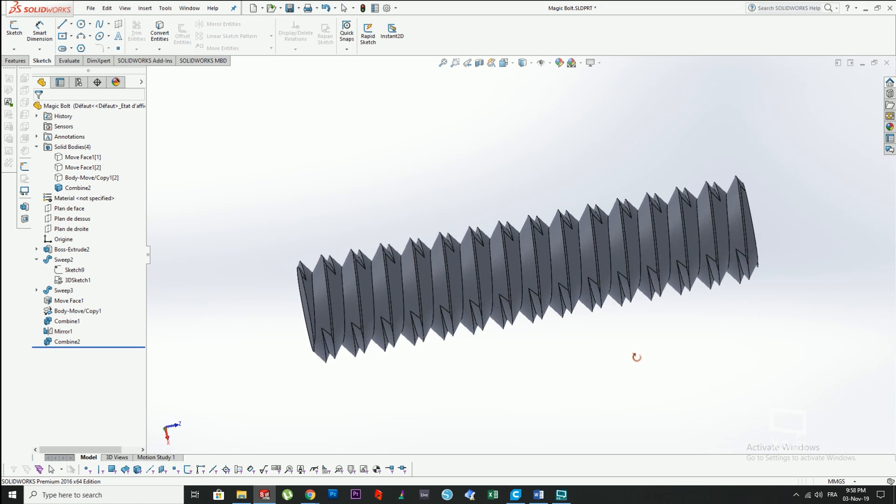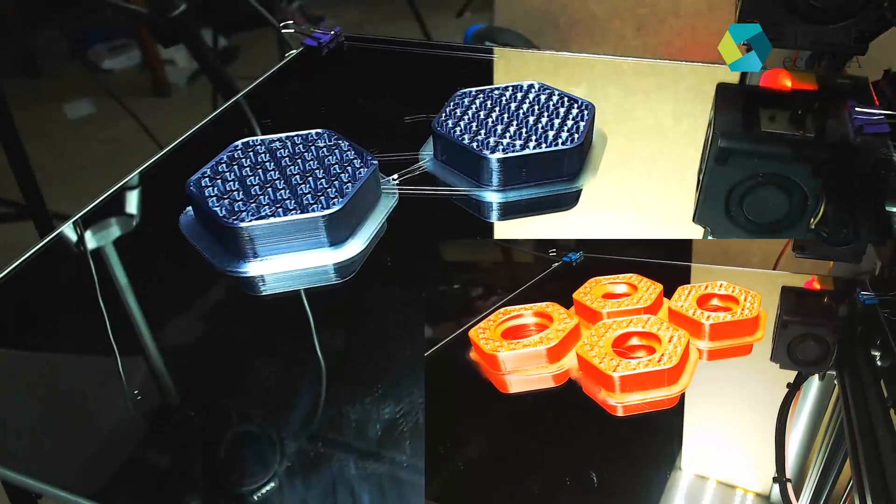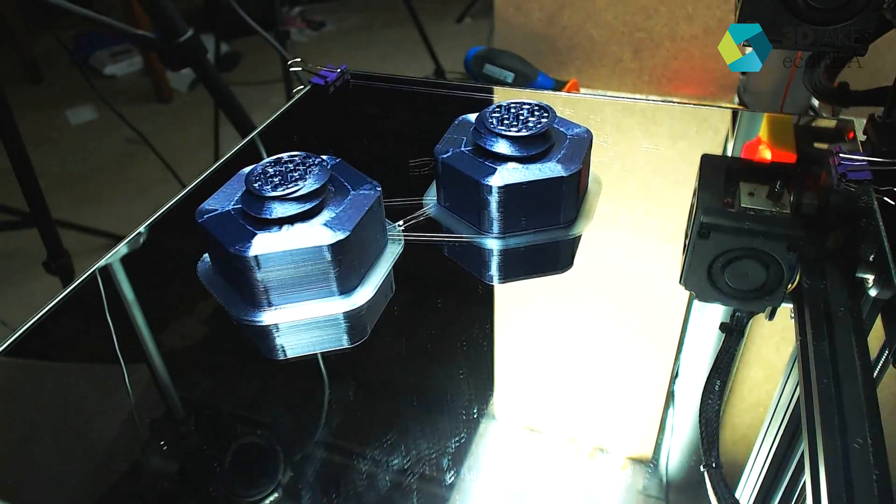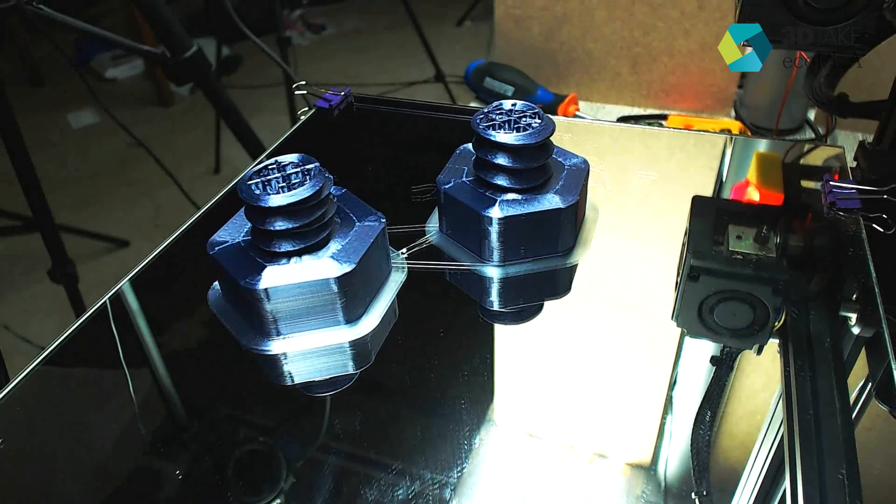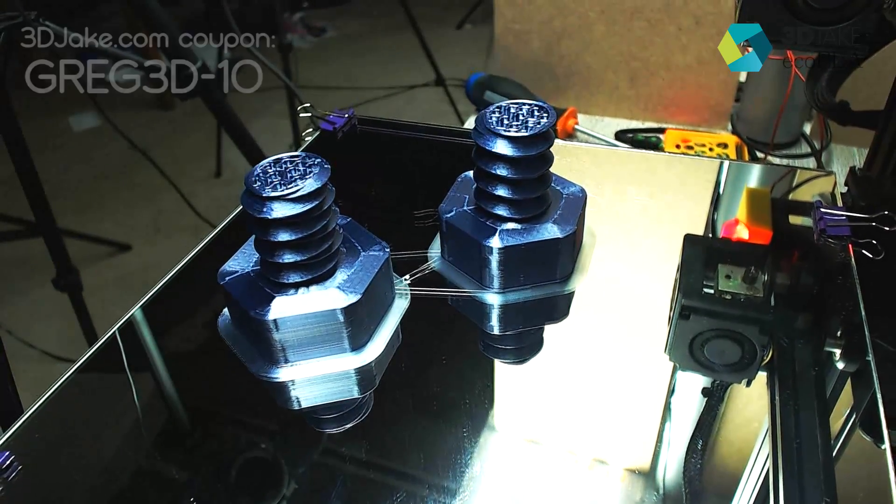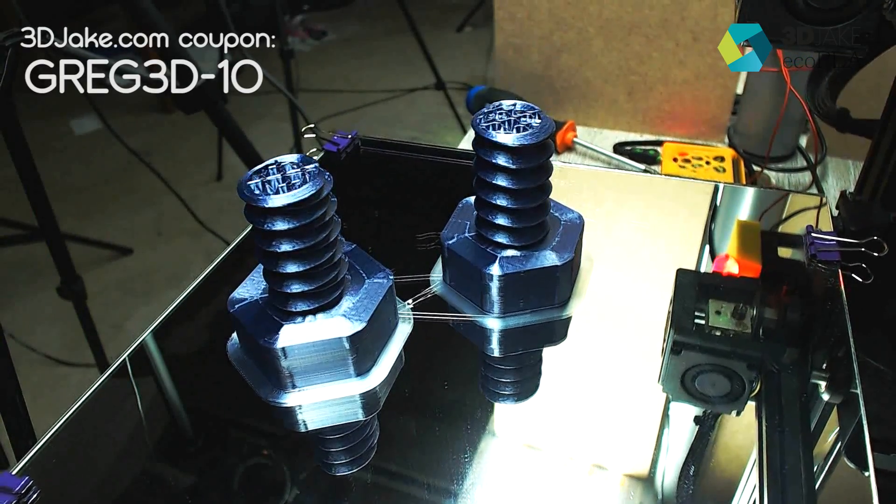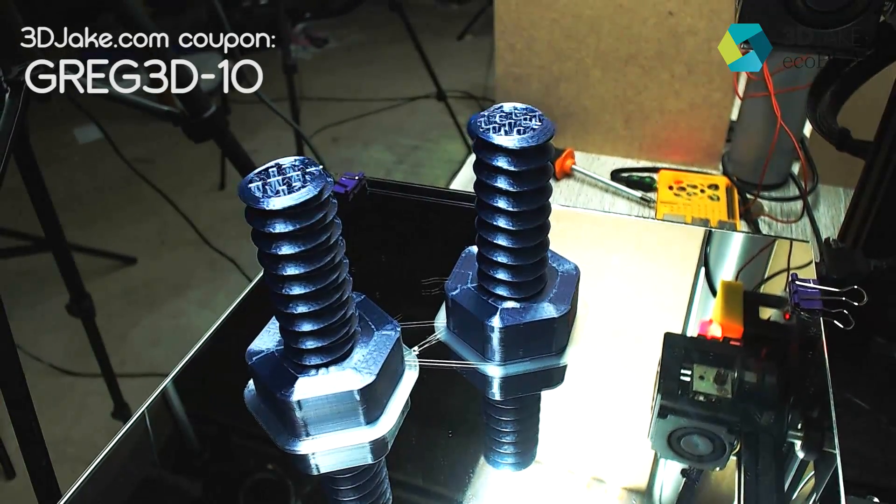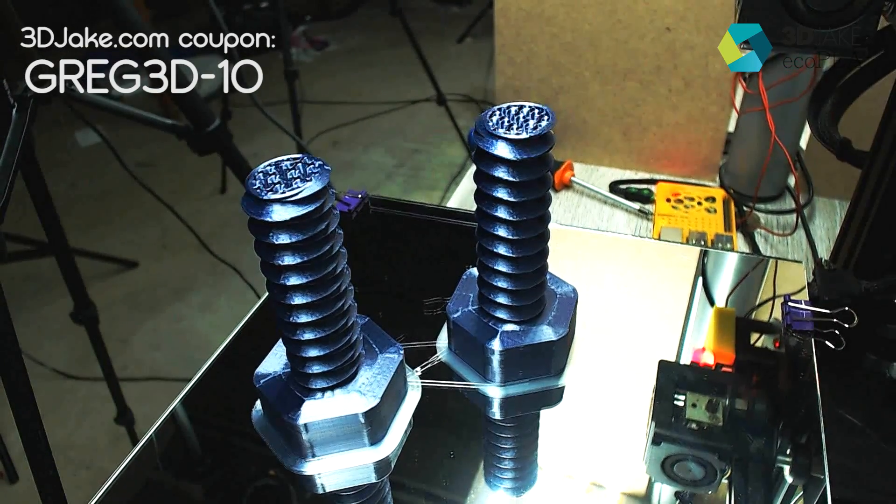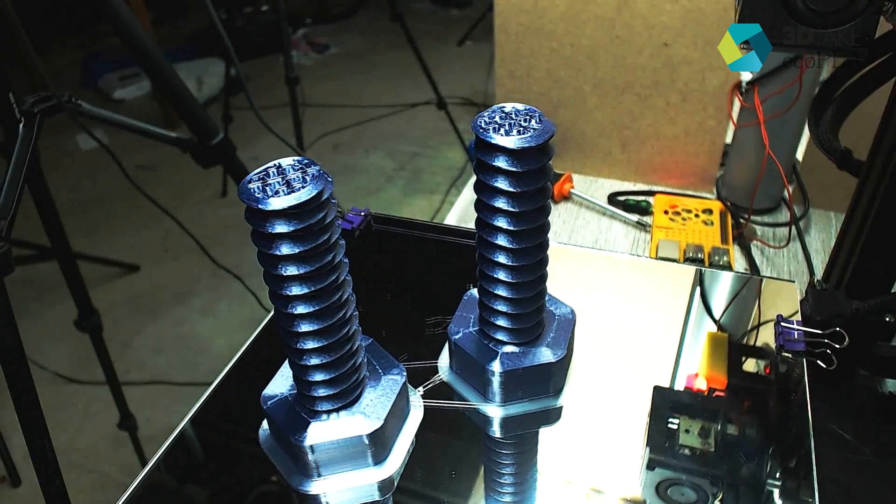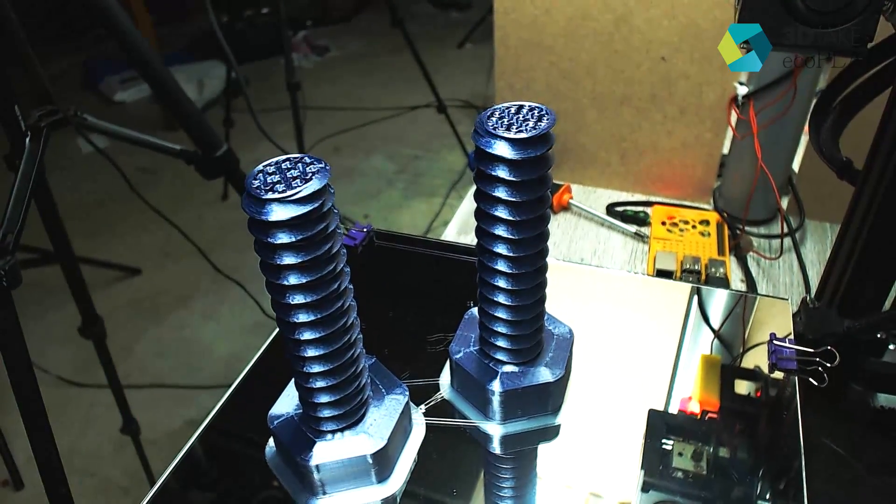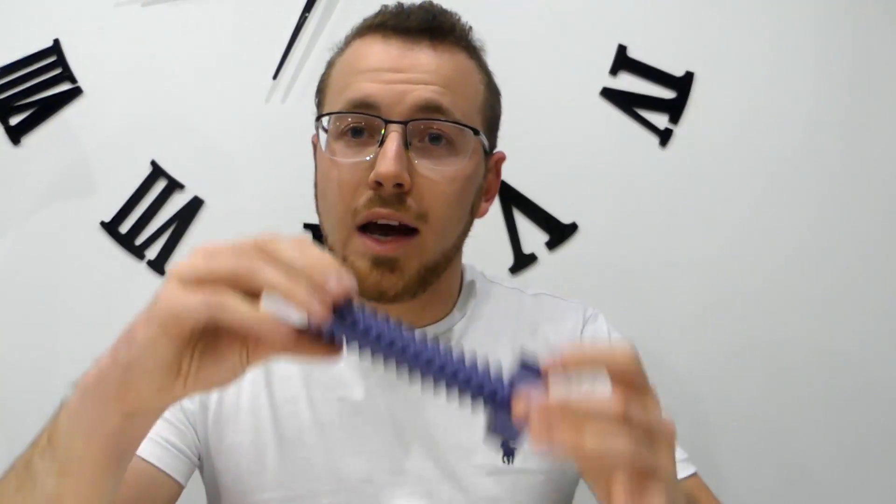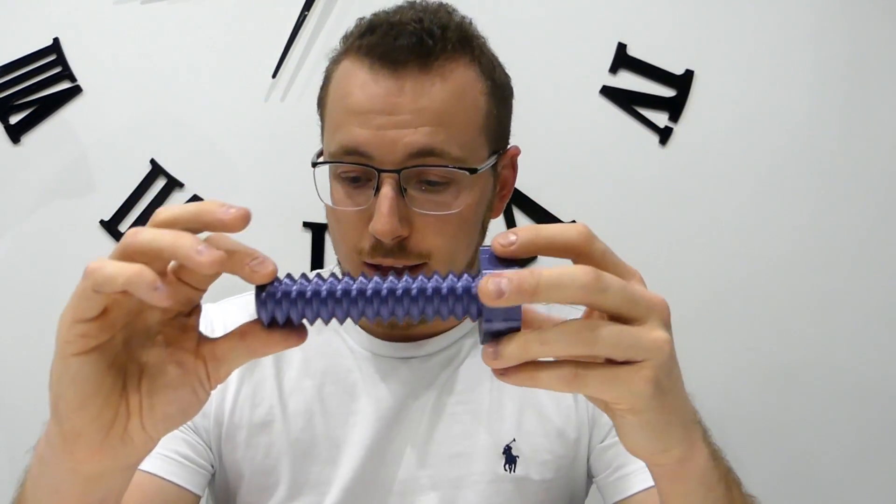I printed this using 3D Jake eco PLA, a really cool material and I love the colors. You can get 10% off using a discount that I got, it's called GREG3D-10 on their website. Everything's 10% cheaper which is already extremely cheap. This video is filmed with a Raspberry Pi and Octolapse this time lapse.